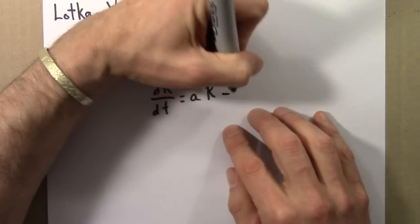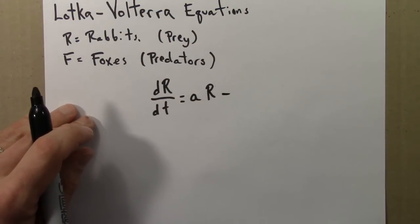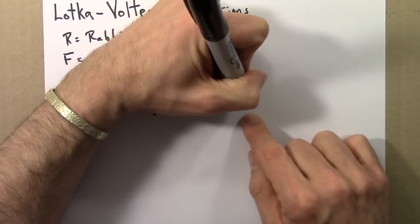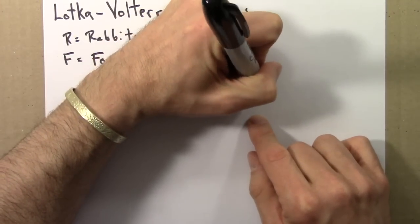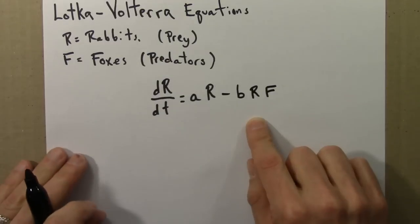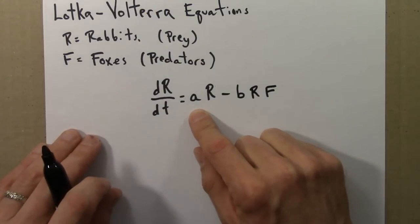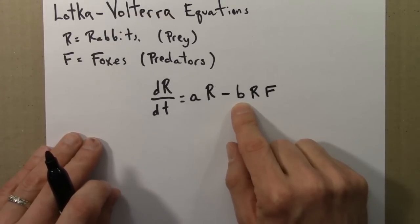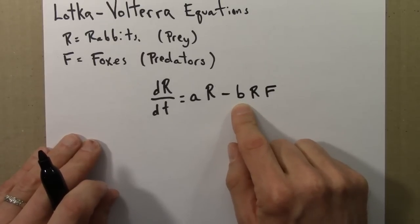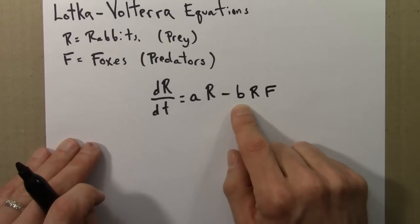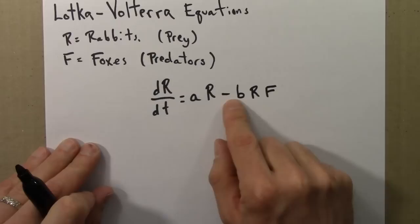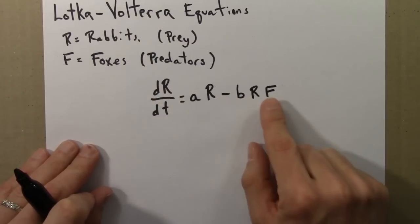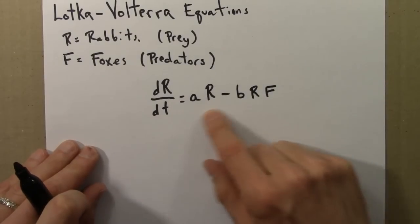However, that's not the end of the story. There are also presence of foxes, and that could enter in like this. So A is a model parameter. It's the rabbit growth rate if there are no foxes. Then B is another model parameter. We'll take B to be positive, so then this term is negative. B is some measure of how deadly the foxes are to the rabbits. Let's look at this term by term. The minus sign means that this term tends to decrease the growth rate.